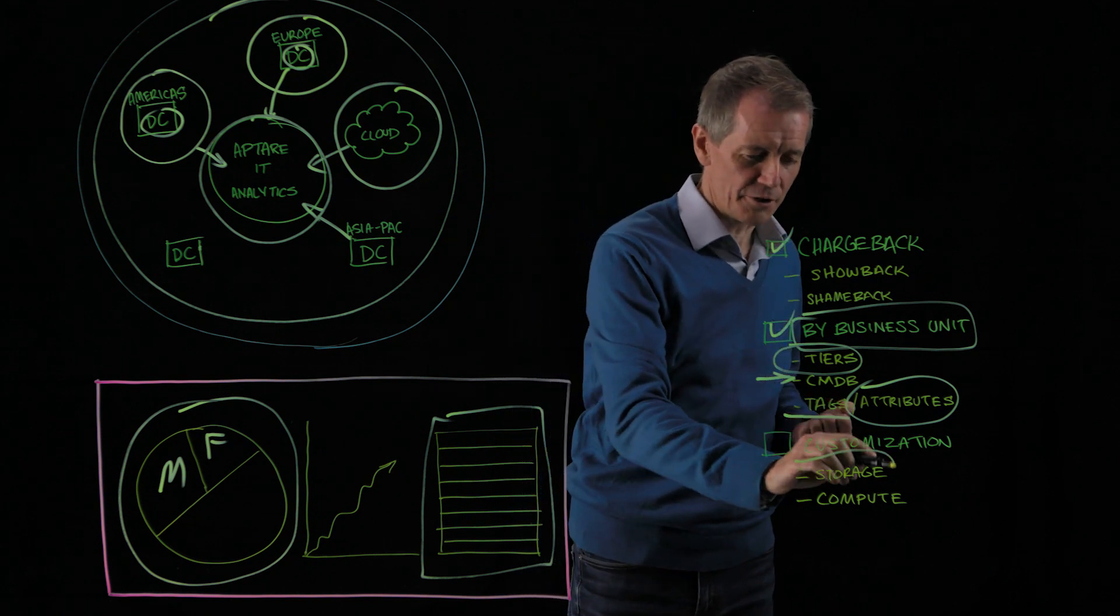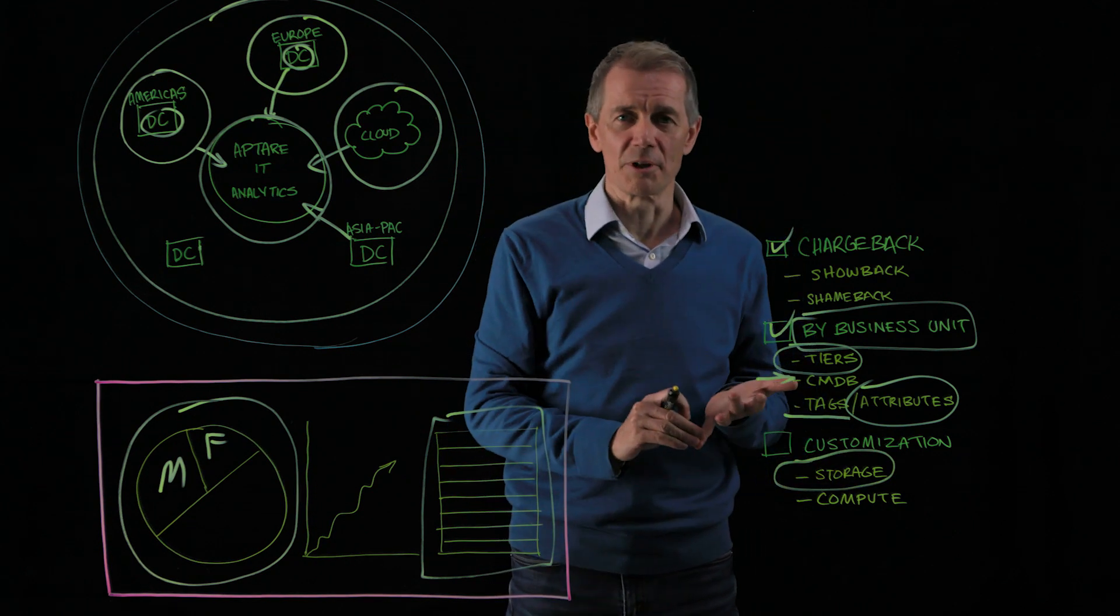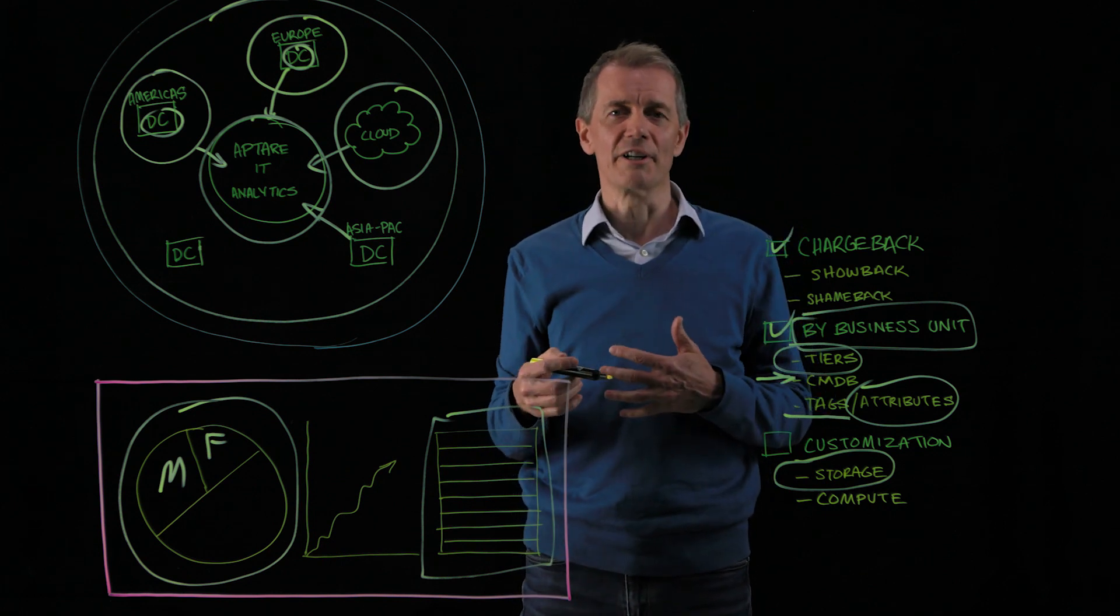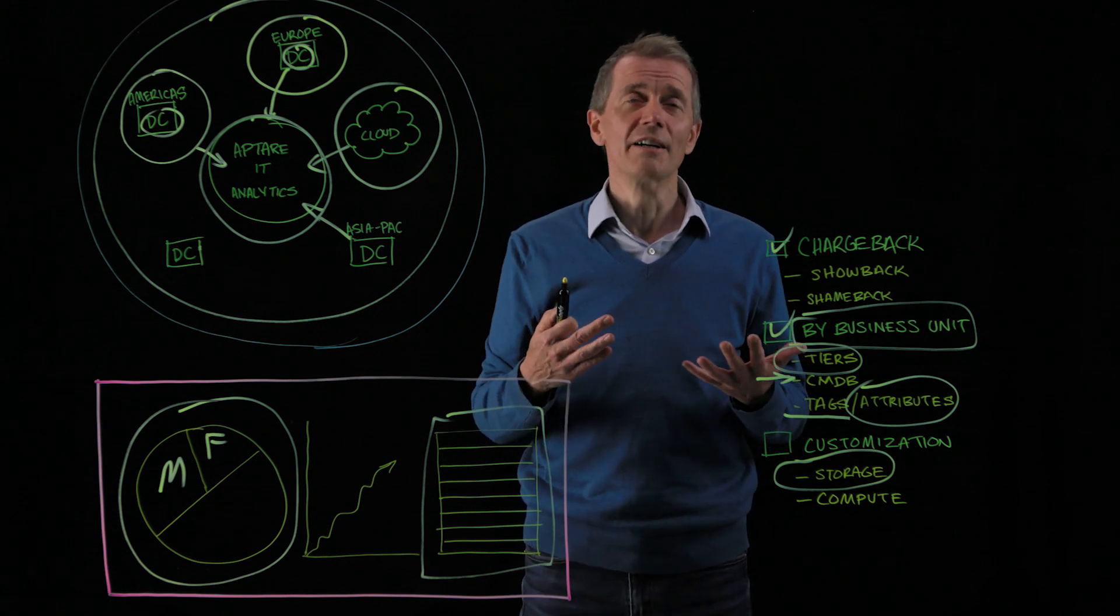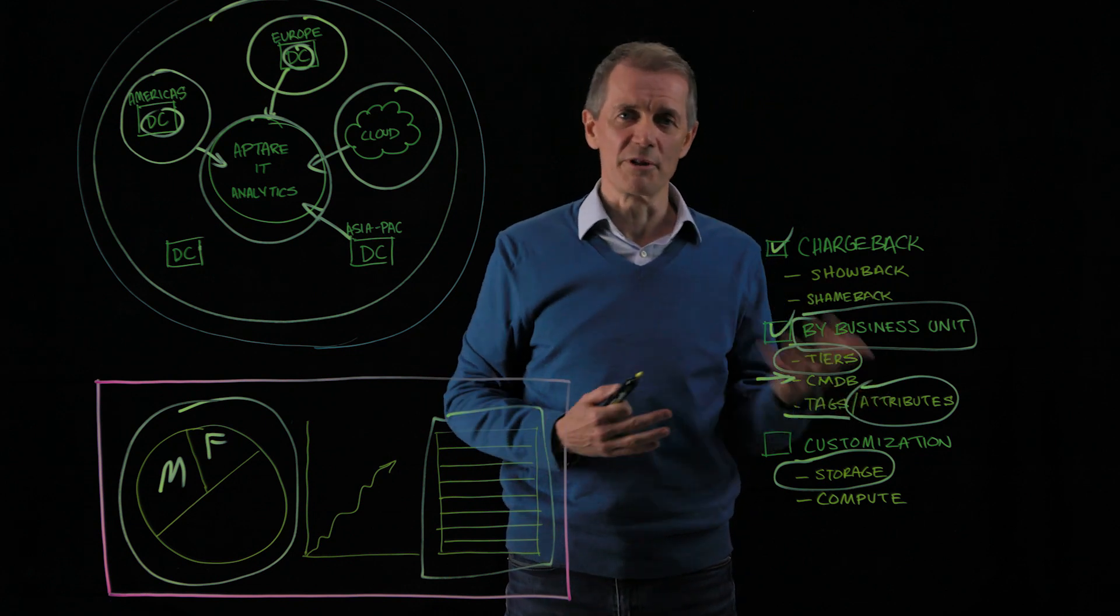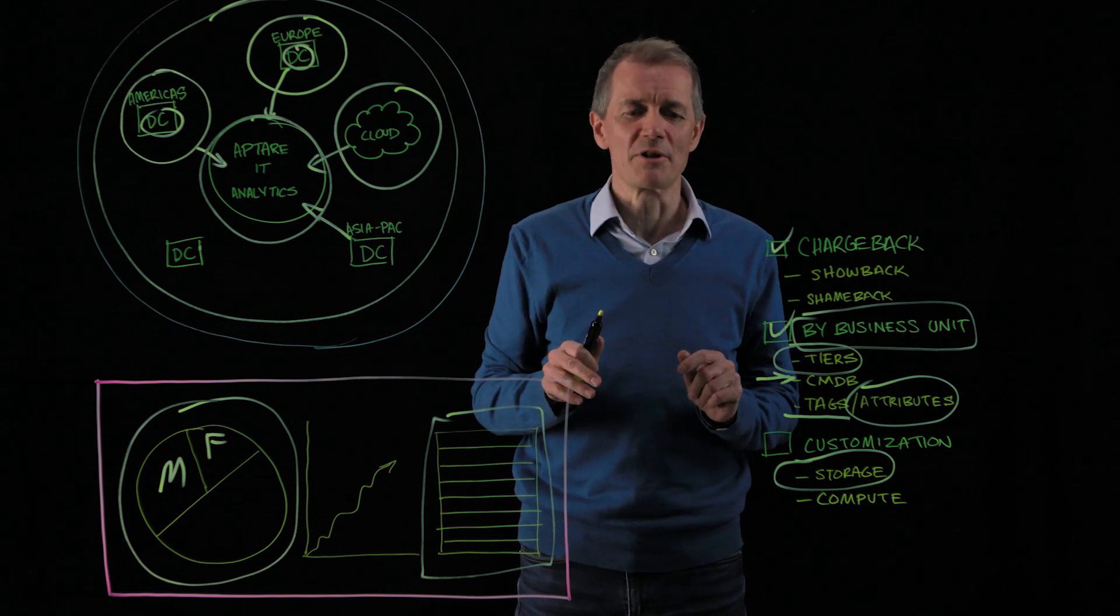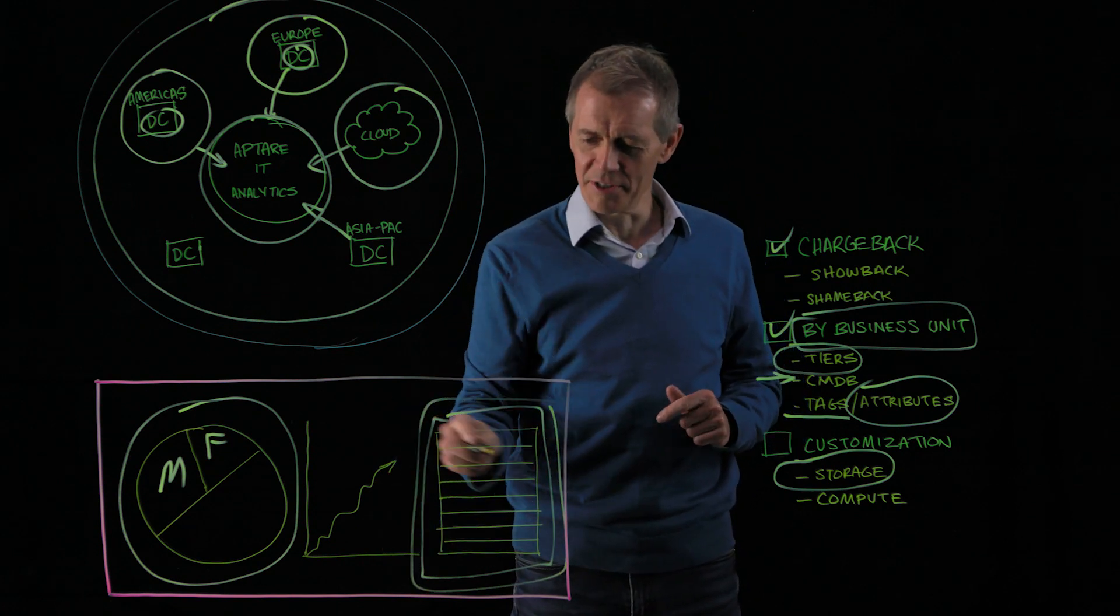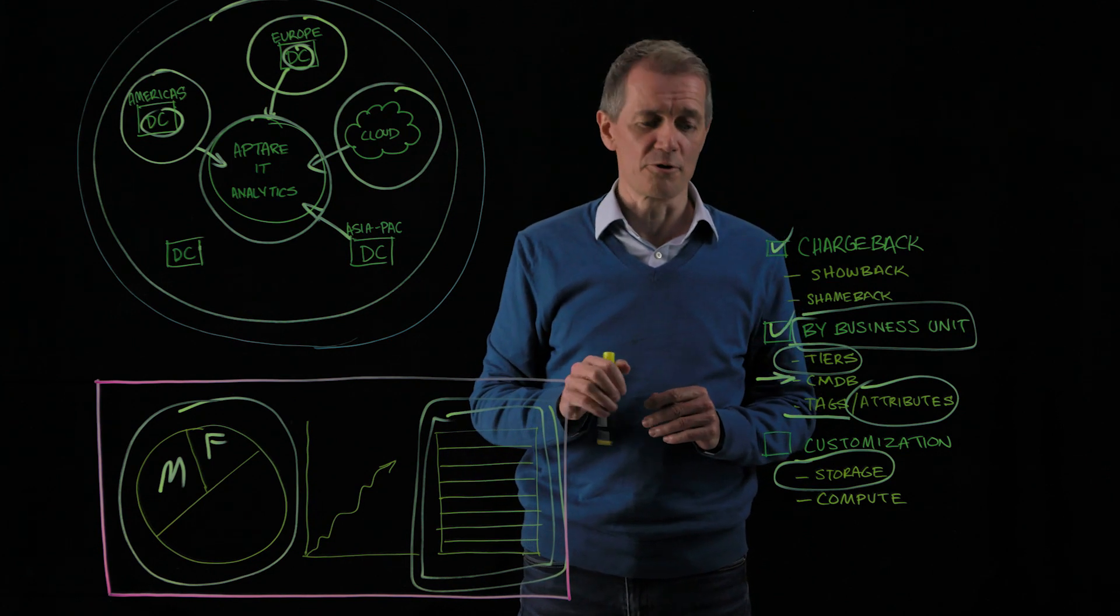When we're looking at storage, for example, we talked about tiering. What is tier one storage? What's tier two storage? We allow you to define the tiers. We allow you to define the cost for those tiers. We allow you to define cost per storage array vendor or type or speed of drive, etc. All that is exposed. And you can actually type in the numbers, run it through our engine, and you can get a report by business unit of the actual dollar cost for the resources that are being consumed.